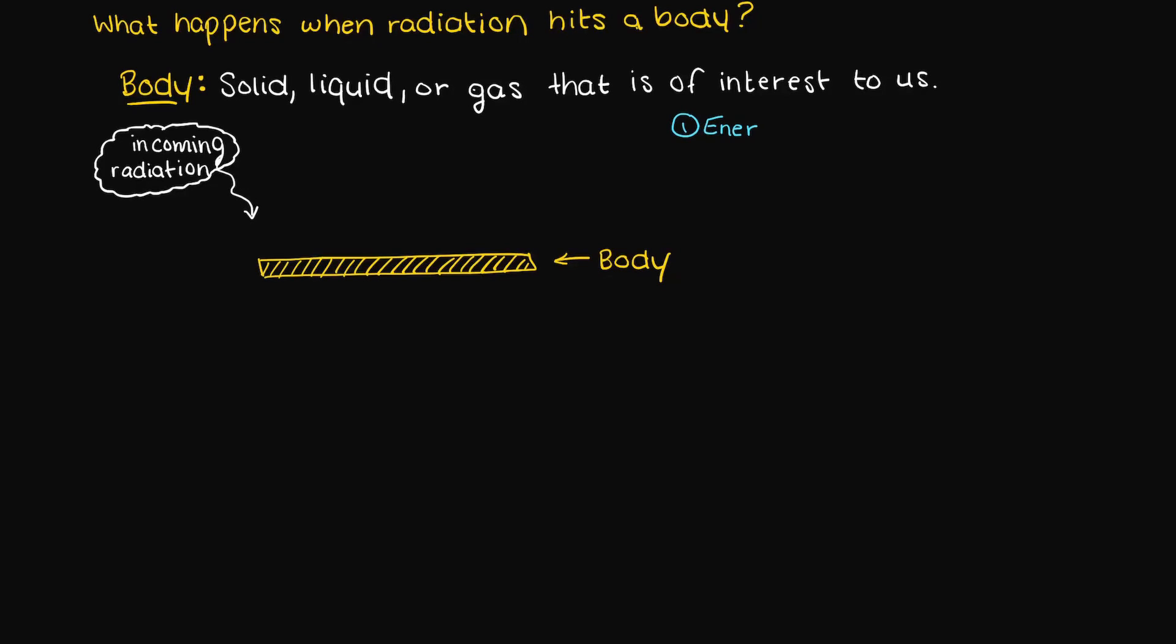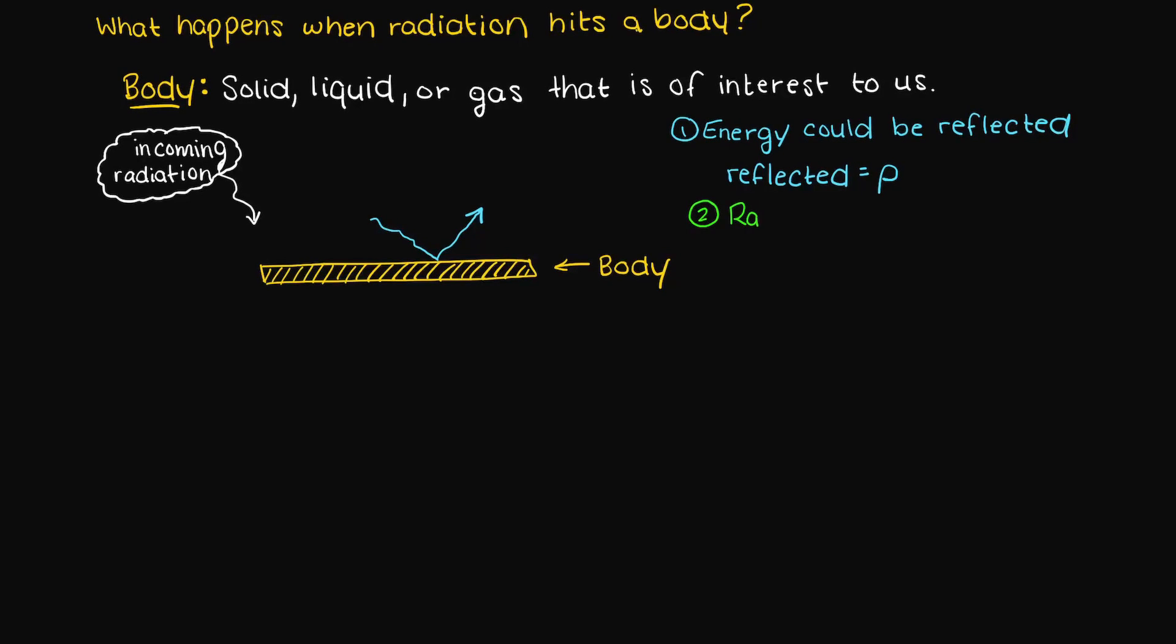Well, firstly, the energy could be reflected and some of the radiation that hit our body could bounce off, and this is just represented by the Greek letter rho. Secondly, the radiation could also be absorbed into the body and heat the body up some, this is represented by alpha.